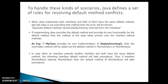To handle this kind of scenario, Java defines a set of rules for resolving default method conflicts. First rule: when a class implements both interfaces and both of them have the same default method, and the class is not overriding that method, then a compilation error will be thrown — duplicate default methods named display greeting inherited from the interfaces. So basically, the compiler is forcing you to override the display greeting method, because this method signature is available in both the implemented interfaces.